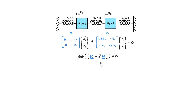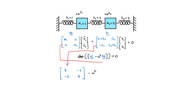Let's look at the matrix K minus omega squared M. The stiffness matrix has K1 plus K2, which is 3, then minus K2 which is minus 2, and minus K2 which is minus 2, and K2 plus K3 which is 4. The mass matrix is a diagonal matrix of 1 and 2.